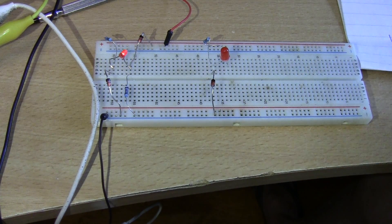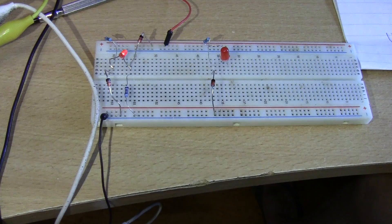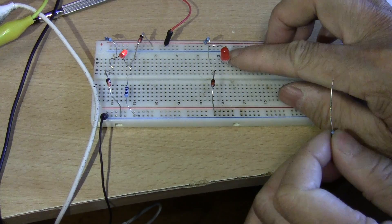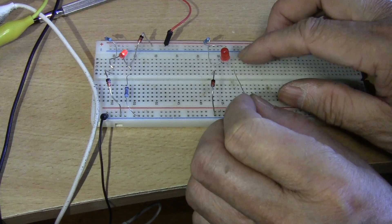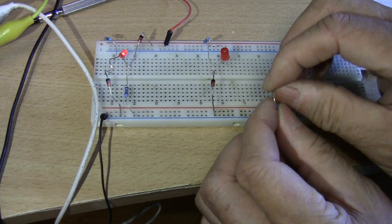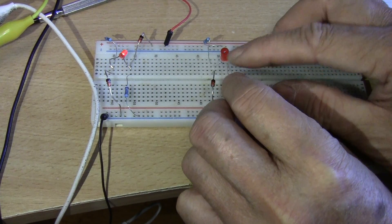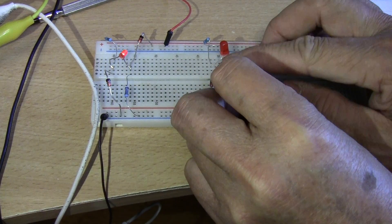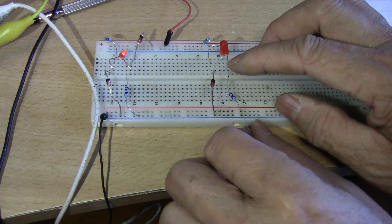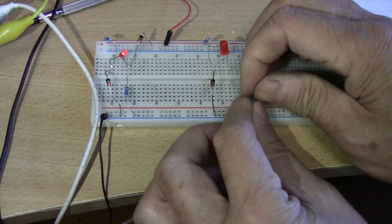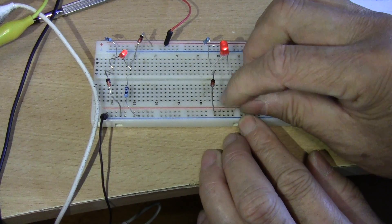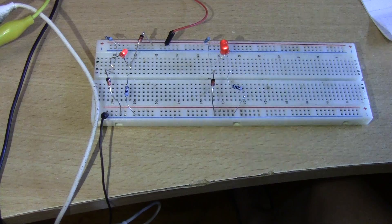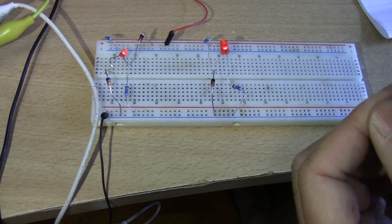And then you have the 10K resistor. 10K resistor goes to your negative rail, or rather the negative leg of the LED, and then goes to ground. And then the final component.